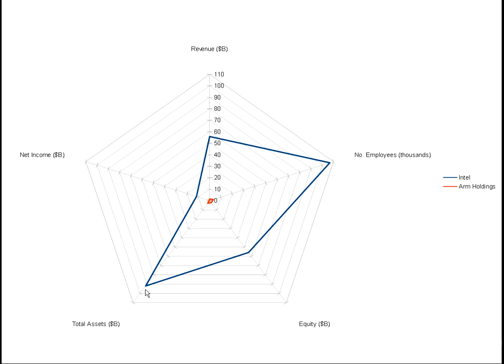Like on this axis, you can see I've plotted the total assets. So the total assets of Intel are here, total assets of Arm are here.